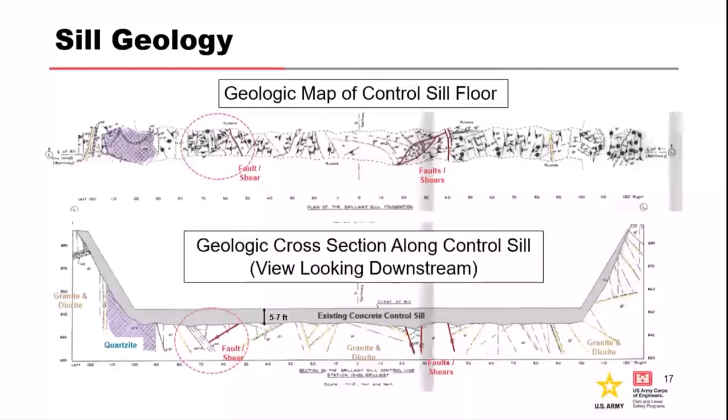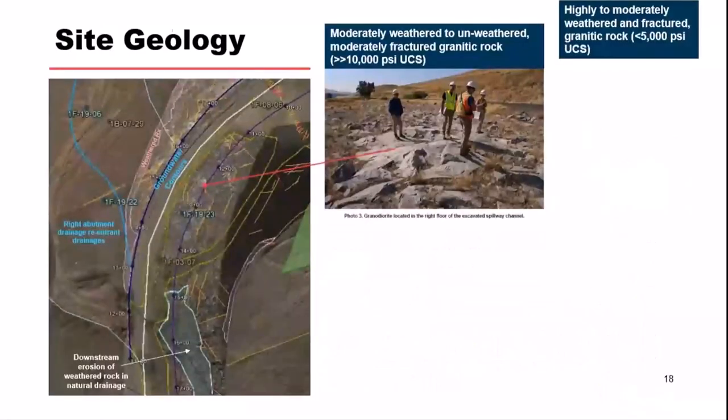Some faults, shears, and highly fractured zones made the district a little bit concerned about possible erodibility issues. There's a pretty detailed geologic map of the foundation floor of the control sill showing some faults and shears in a busted-up zone. There may be a weak zone running up the left side of the spillway possibly related to shears or faults.